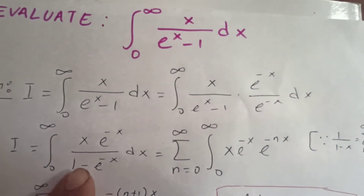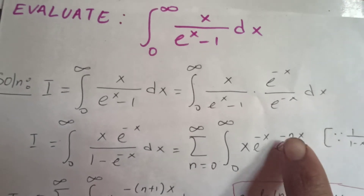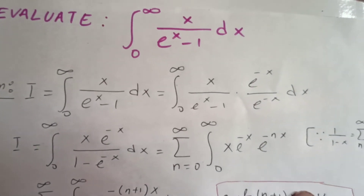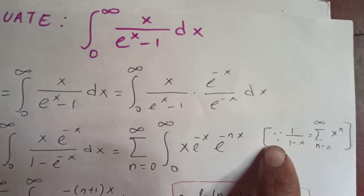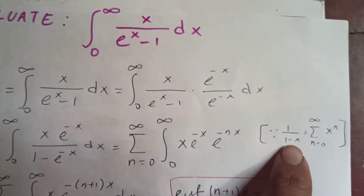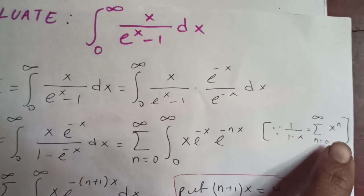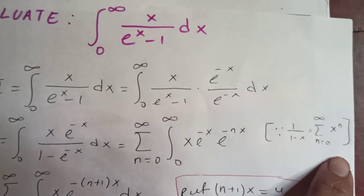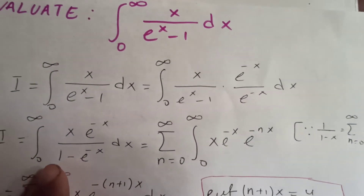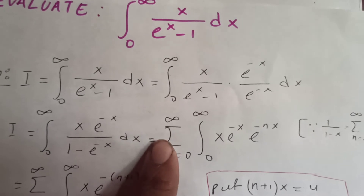This is nothing but the sum from n equal to zero to infinity of e^(−nx), because 1 over (1 minus x) equals the sum from n equal to zero to infinity of xⁿ. Applying that geometric series formula, we get the sum from n equal to zero to infinity.